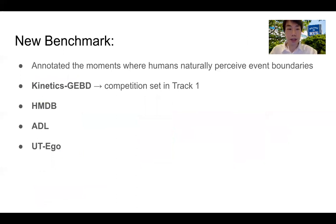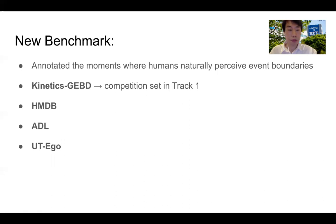It is pretty challenging to annotate these kinds of generic event boundaries, especially on conventional computer vision datasets. There was no such annotation previously, and we basically annotated such moments where humans naturally perceive the boundaries on four datasets: Kinetics, HMDB — these are two datasets that are relatively short, like 10 seconds per video — and also two other datasets, ADR and UT Eagle Century, which are quite long, like a few hours per video, but with a relatively small number of videos. We focus on the Kinetics dataset in our competition because it is quite popular for action classification and contains diverse categories and a large number of event boundaries and event segments.